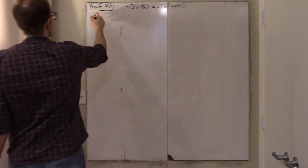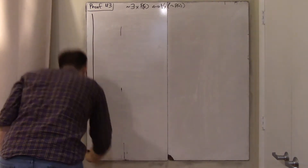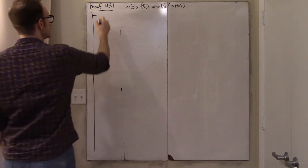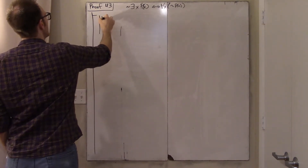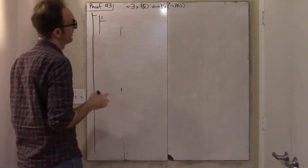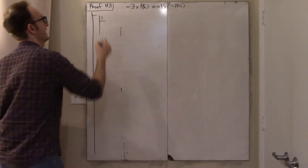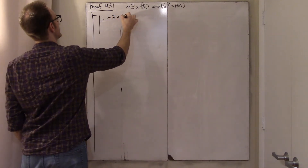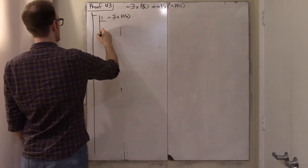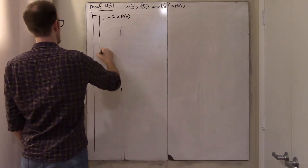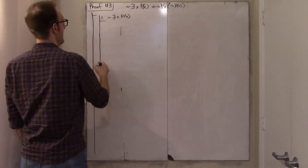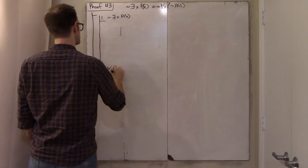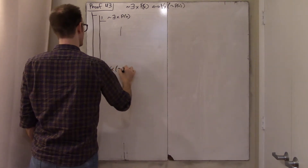This is a proof from no premises. The beginning kind of writes itself: I will assume that there does not exist a person with property P, and I will try to show that everyone doesn't have property P.